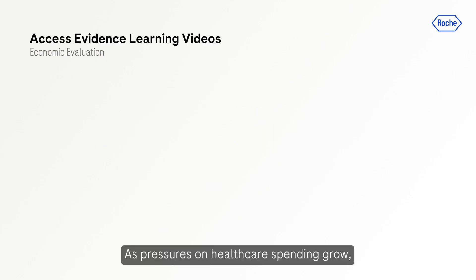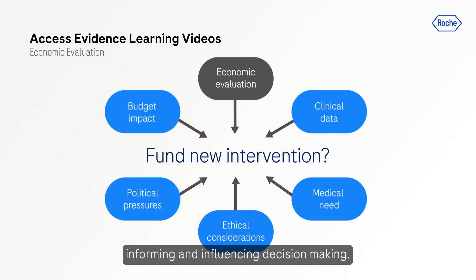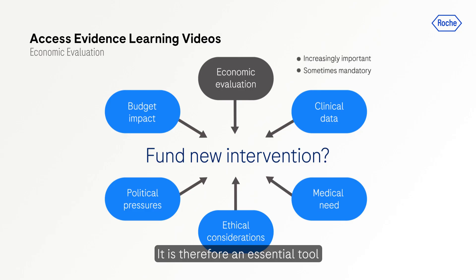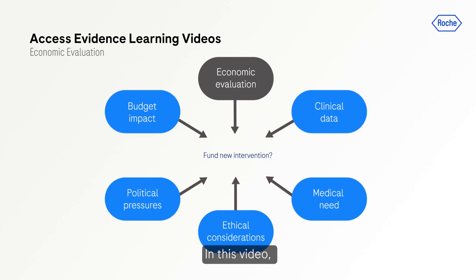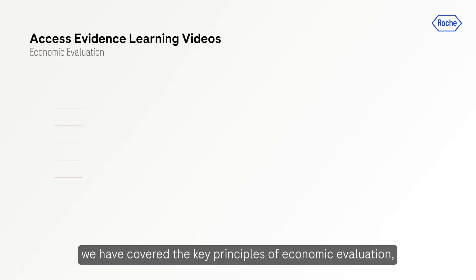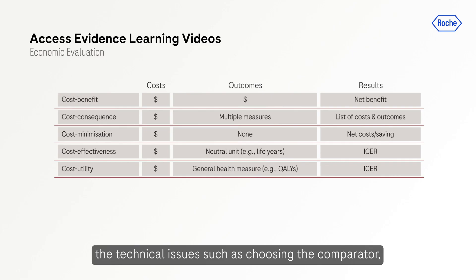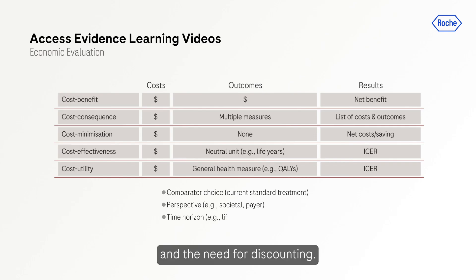As pressures on health care spending grow, economic evaluation is becoming an increasingly important means of informing and influencing decision making. In fact, in some circumstances it is now a mandatory requirement, making it an essential tool for pharmaceutical manufacturers that need to convince decision makers of the value of their products. In this video we have covered the key principles of economic evaluation, including types of analysis, technical issues such as choosing the comparator, perspective and time horizon, types of costs, and the need for discounting.